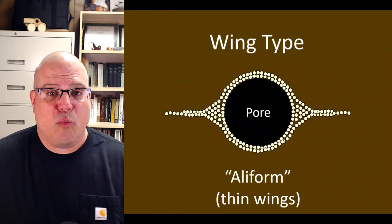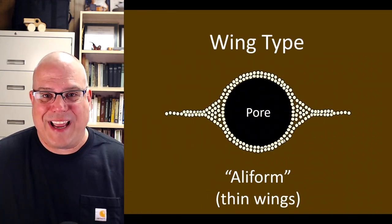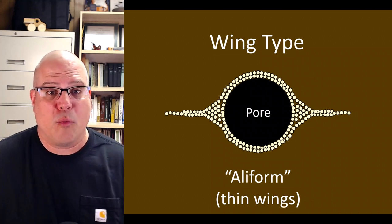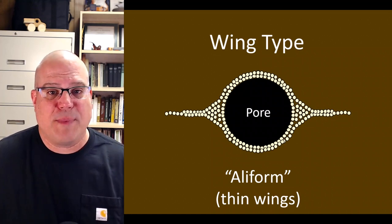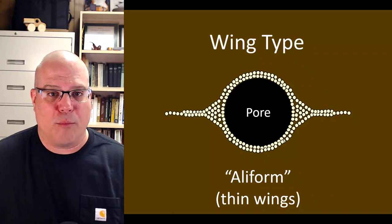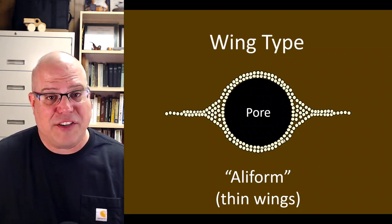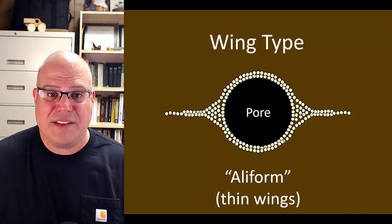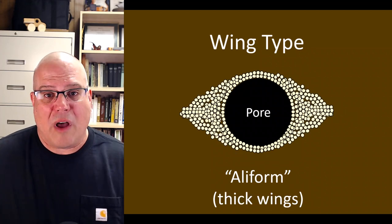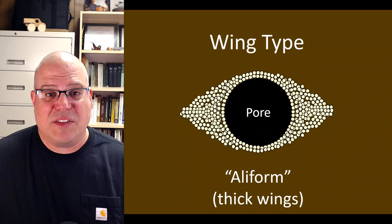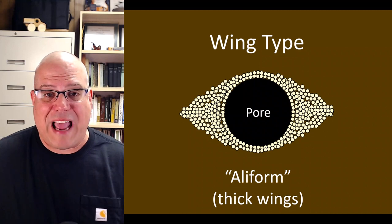Next, we'll move from the ring type to the wing type. The parenchyma cells hugging the vessel project horizontally to form wing-like extensions. We call this pattern aliform parenchyma, and just as with the previous pattern, we can see some variation. One image shows thin wings, while another shows much thicker wings. In either case, we call this pattern aliform.